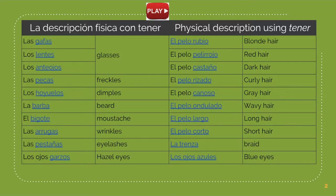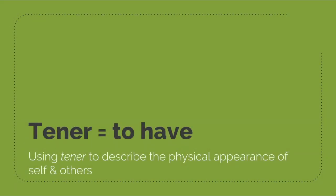Previously, we talked about the verb ser and the vocabulary words that are used with that. And now we're going to expand a little bit and use the verb tener. The verb tener means to have. So what we're going to do is use this verb to describe the physical appearance of ourselves and others.